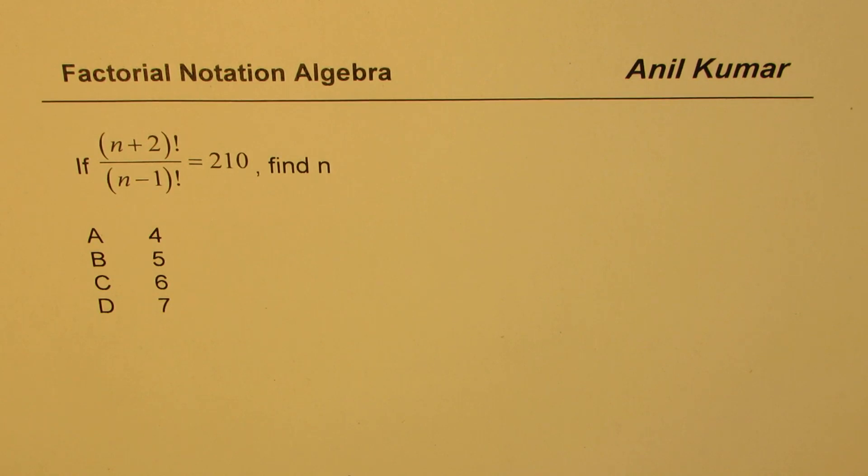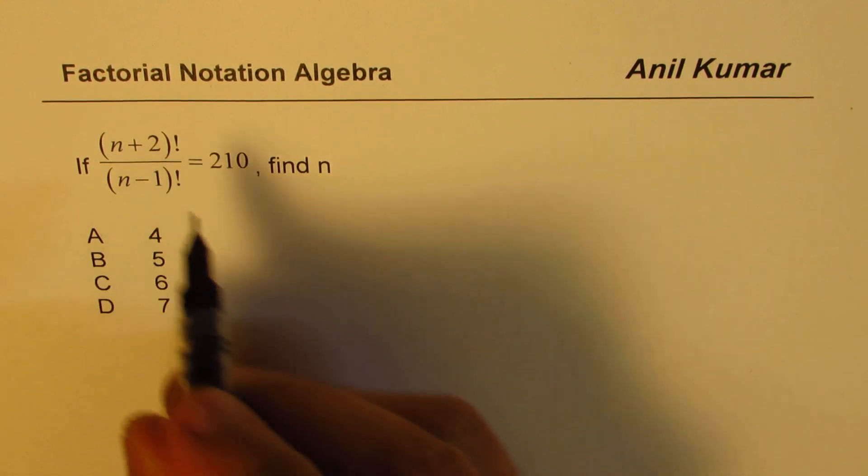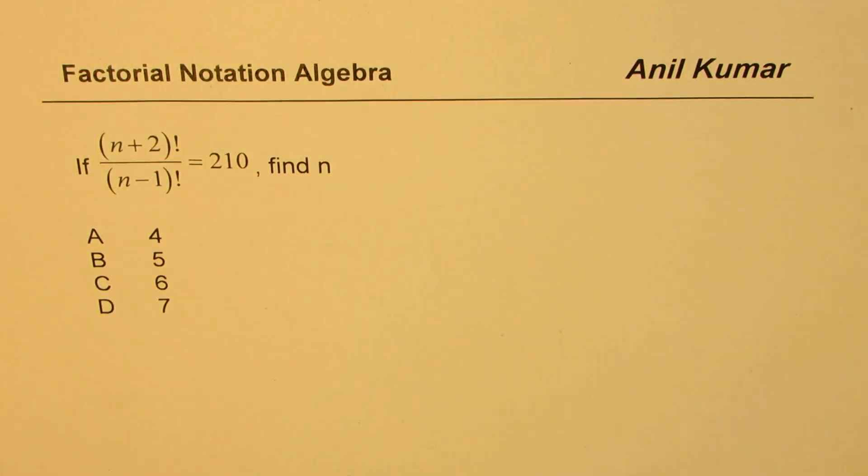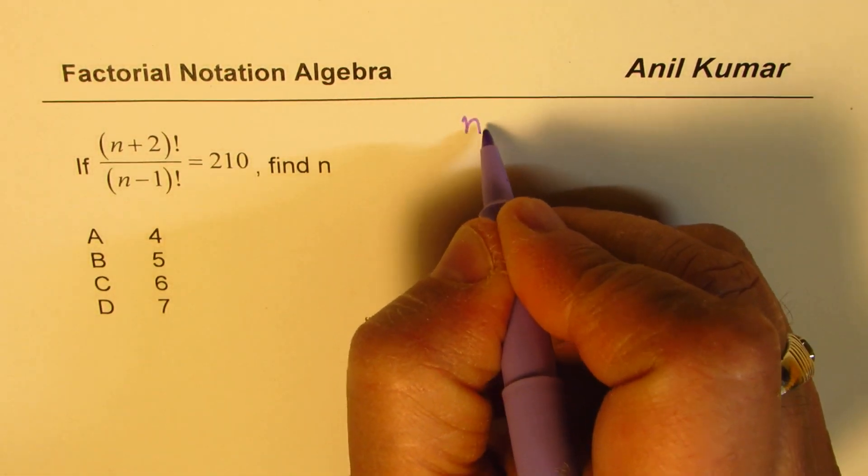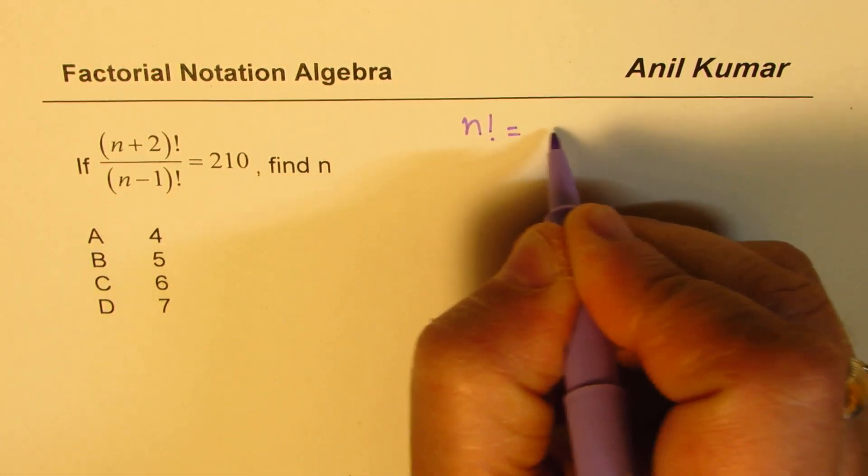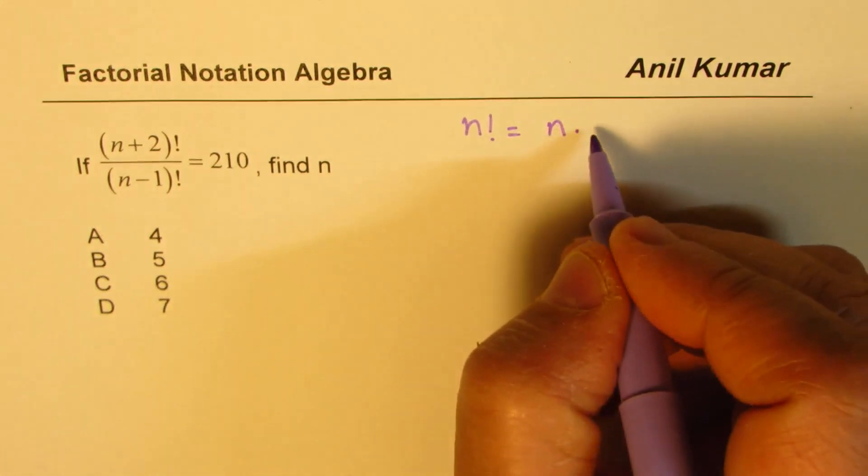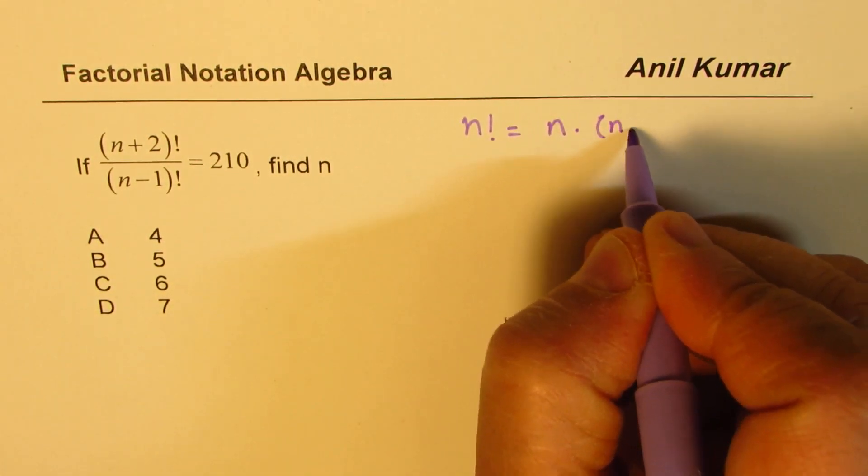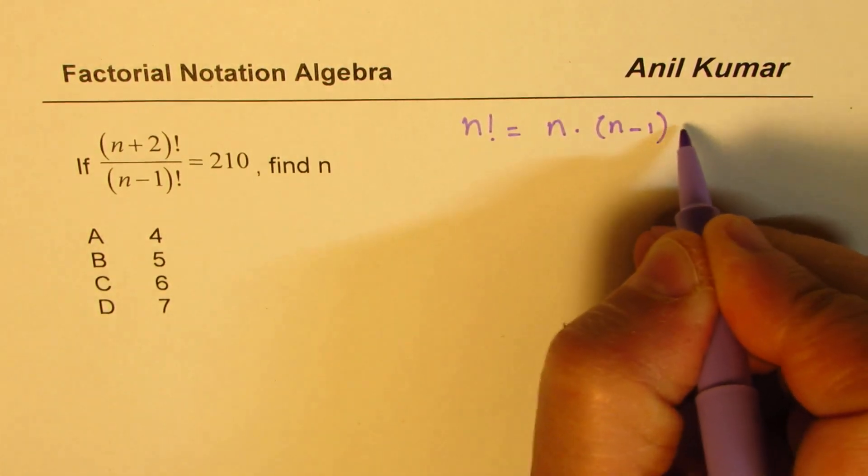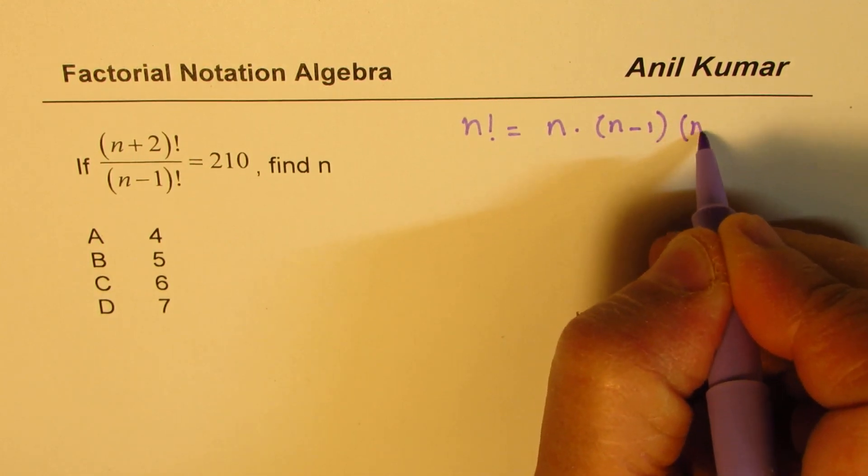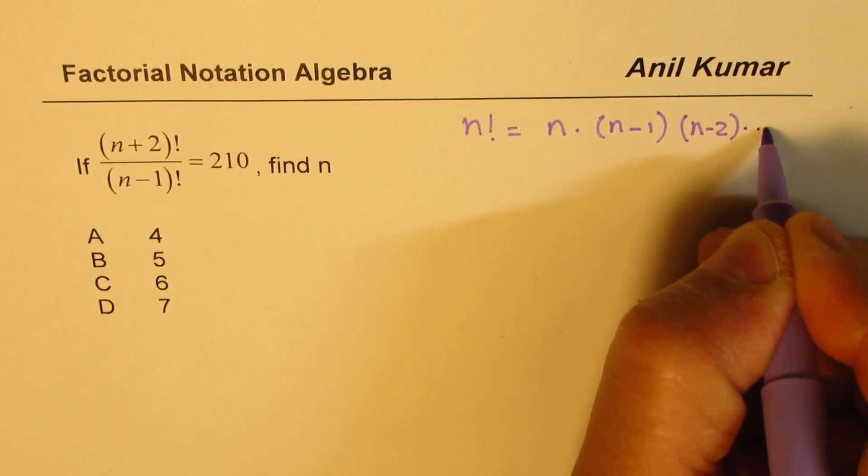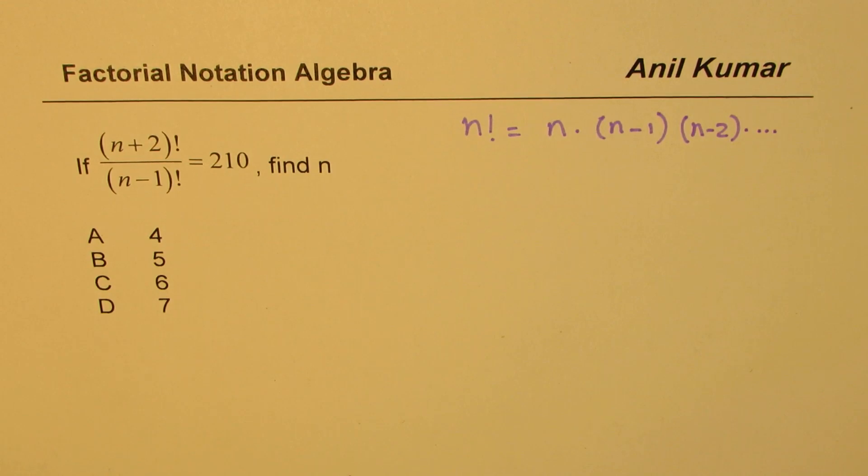You can always pause the video, answer the question, and then look into my suggestions. I hope you remember what is the meaning of n factorial. Let's write down what n factorial is. n factorial means product of the numbers in a sequence: n times (n-1) times (n-2), and so on. This series could be written in short with the factorial notation.